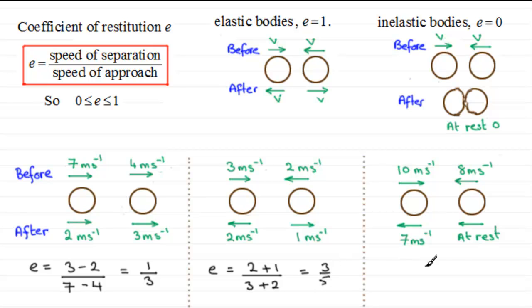So I did say I was going to give you this one to try. We've got our two particles approaching one another, 10 meters per second, 8 meters per second in this direction. And then after they collide, this one moves off in the opposite direction at 7 meters per second, and this one stays at rest. So what would e be for this one? I'll give you a moment or two to think this one out. Maybe just pause the video for a moment.